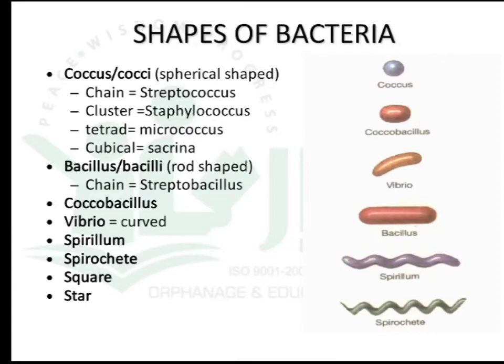Bacteria can be classified according to their morphological shape into: coccus, bacillus, coccobacillus, vibrio, spirillum, spirochete, square, and star shapes.